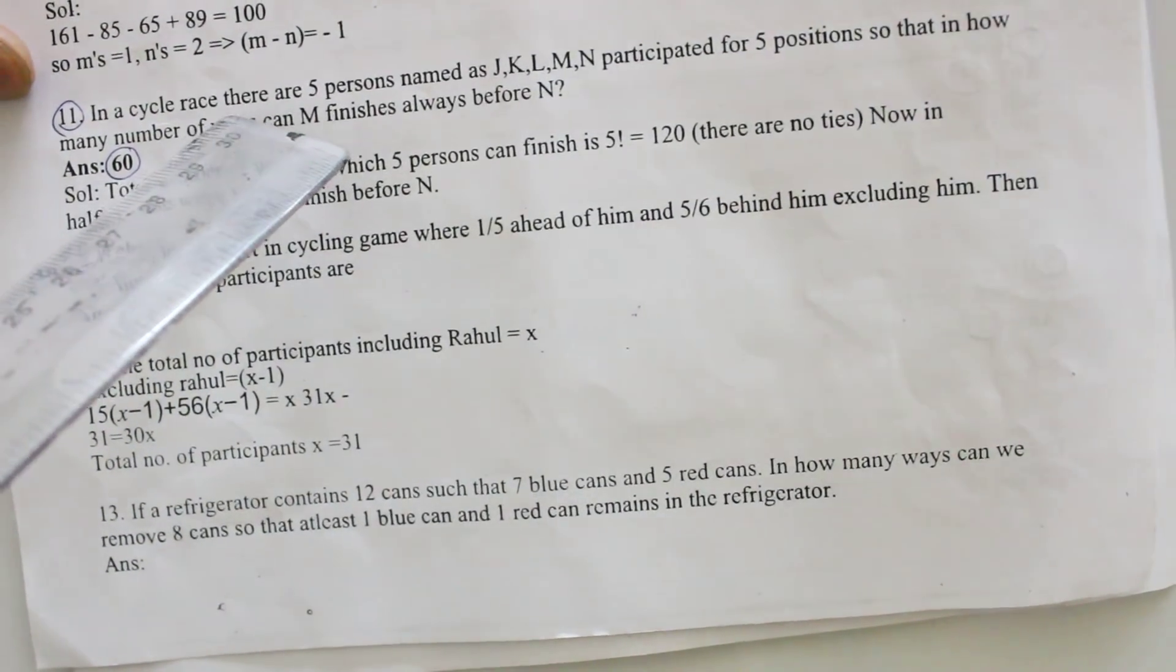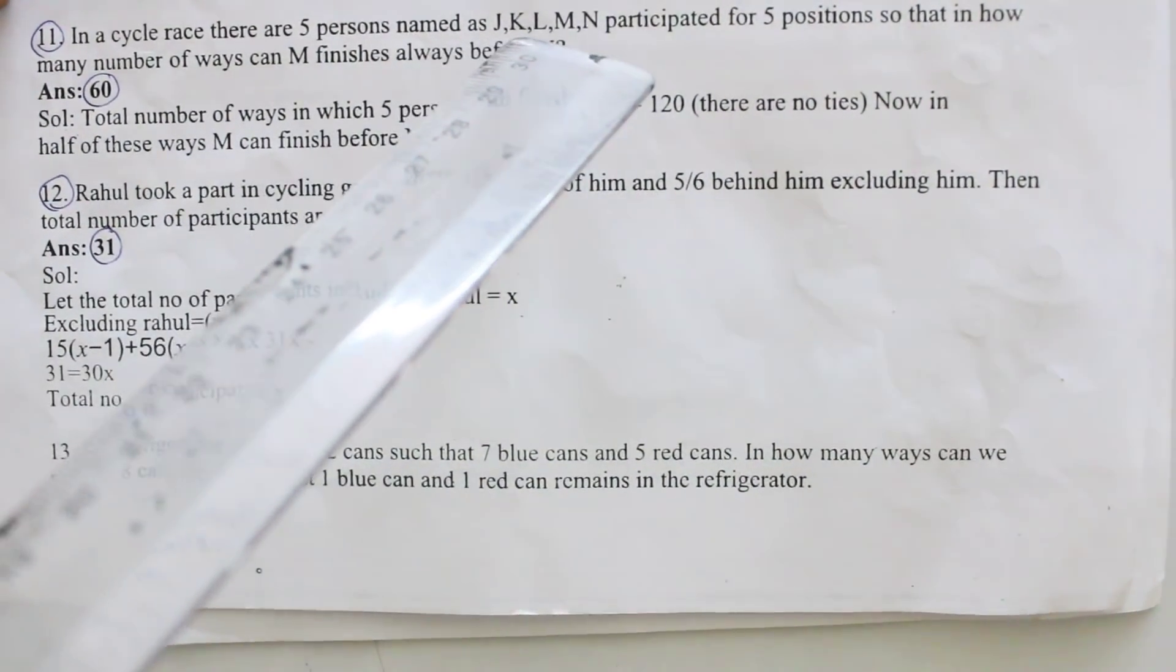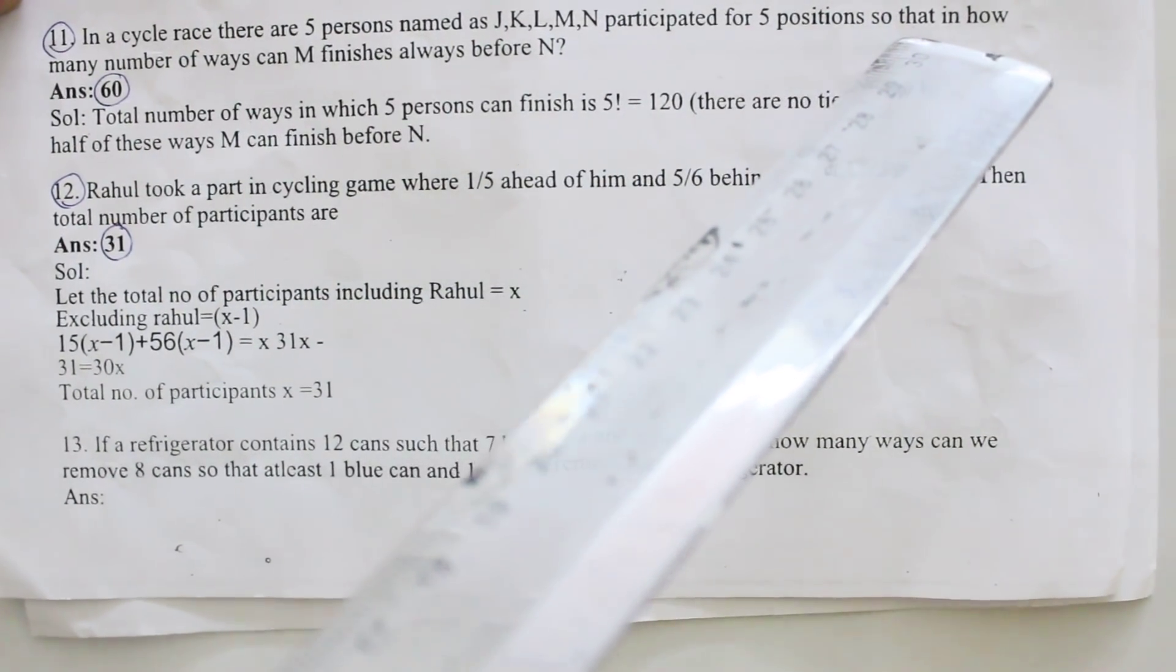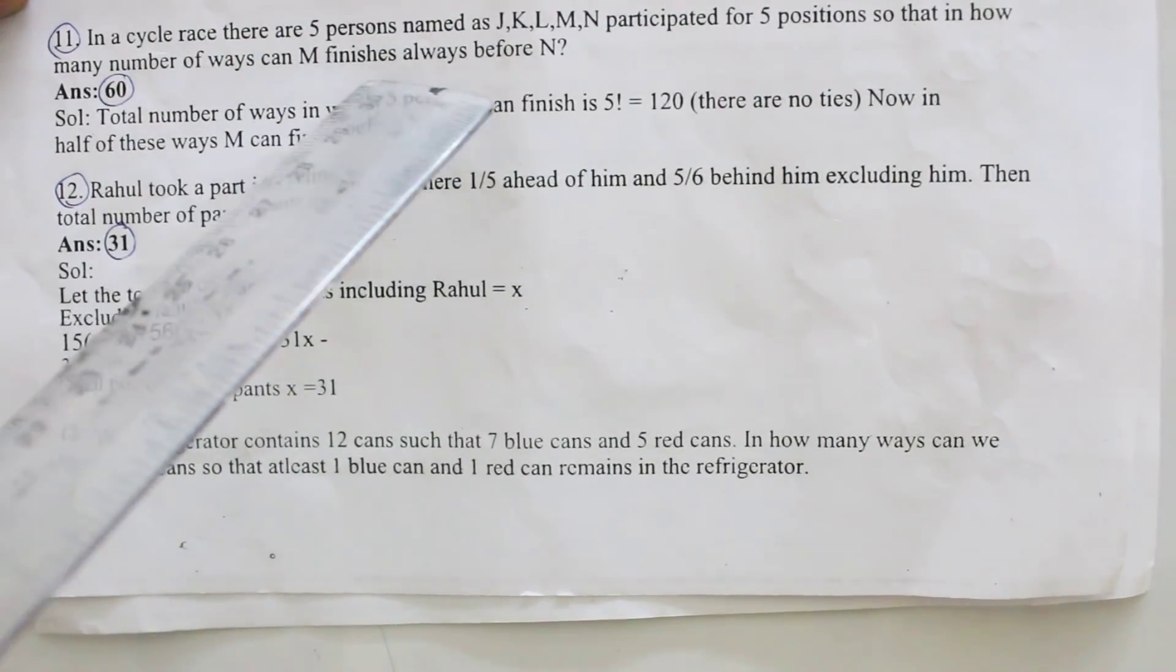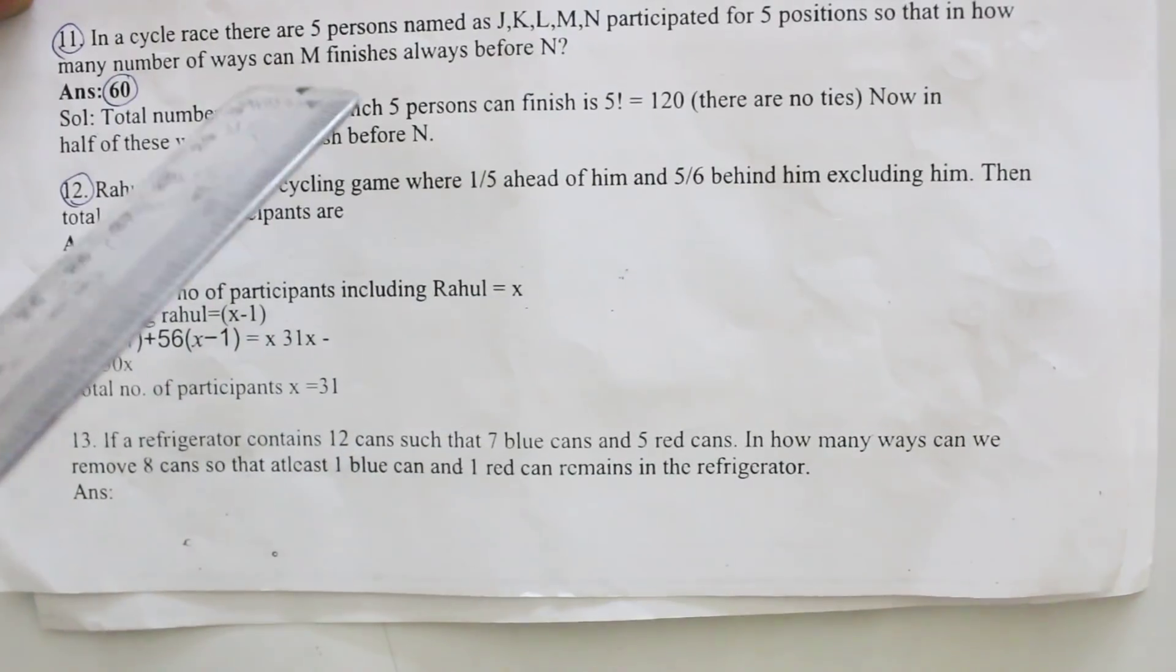Eleventh one: In a cycle race there are 5 persons named as J, K, L, M, N participated for 5 positions so that in how many number of ways can M finishes always before N? Your answer is 60.